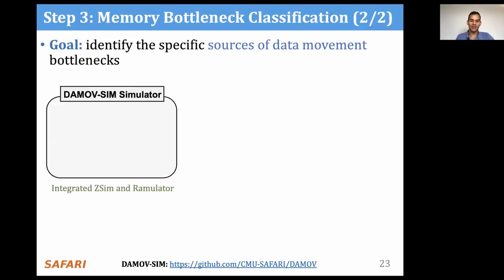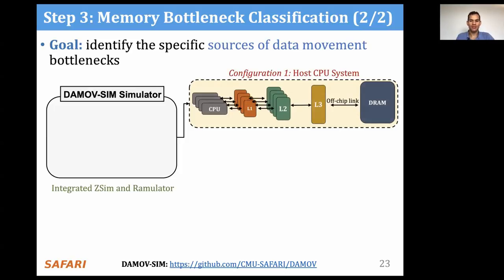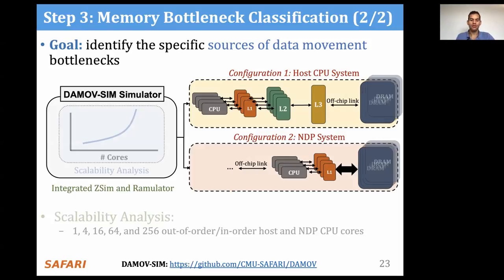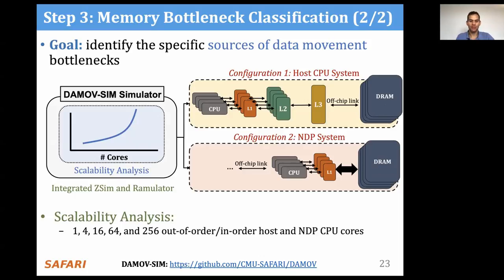The goal of the scalability analysis is to identify the specific sources that lead to data movement bottlenecks. To do so, we use our new DaMovSim simulator, which integrates the ZSIM CPU simulator with the Ramulator memory simulator. With our simulator, we evaluate three different system configurations. The first is a host CPU system with a deep cache hierarchy consisting of private L1 and L2 caches and a shared L3 cache. The second configuration is an NDP system with only a private L1 cache. The third configuration adds prefetchers on top of configuration one. We vary the number of cores across all three configurations from 1 to 256, using a 3D stacked memory device as the main memory in all configurations.